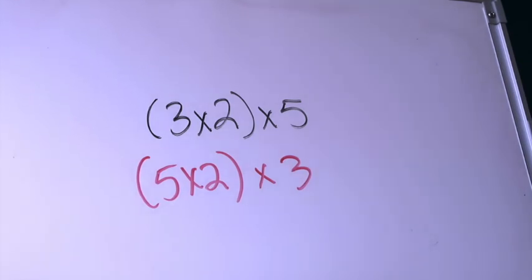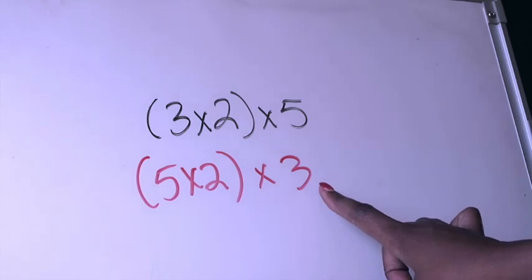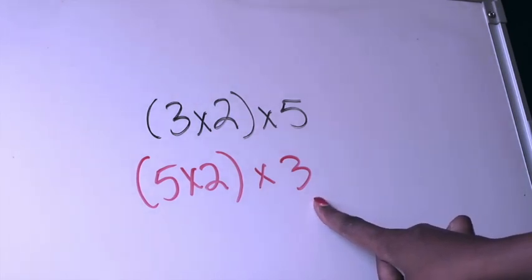Now, notice I still have the same factors. I still have 5, 2, and 3 but they're just in different orders. In the original problem, the 3 was there but now in my rewritten problem using the associative property it's there.